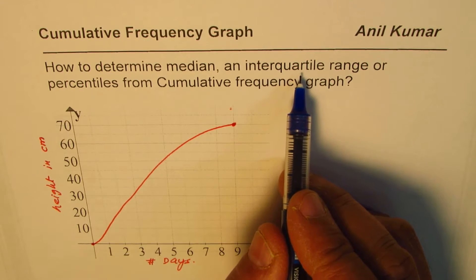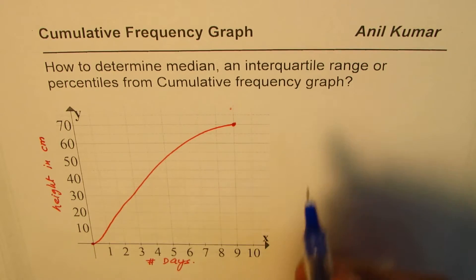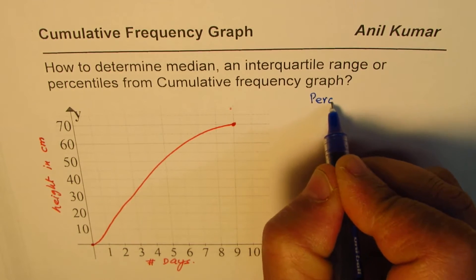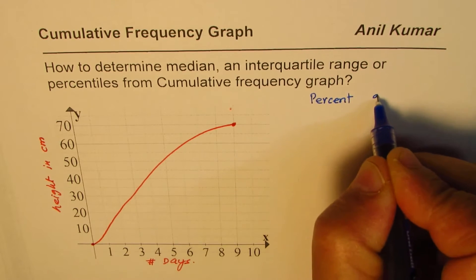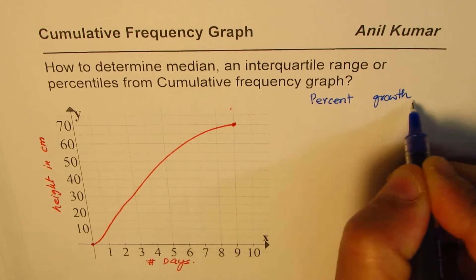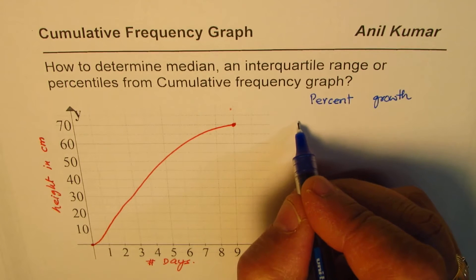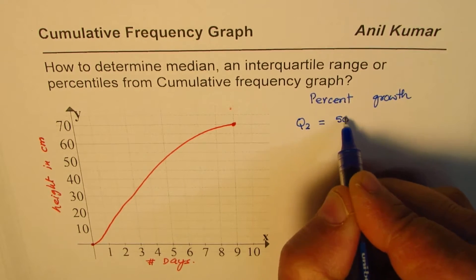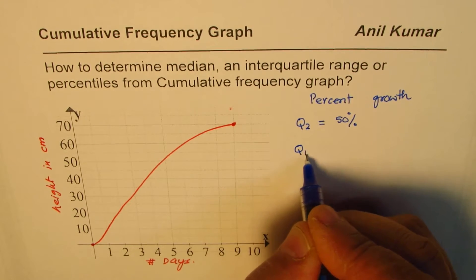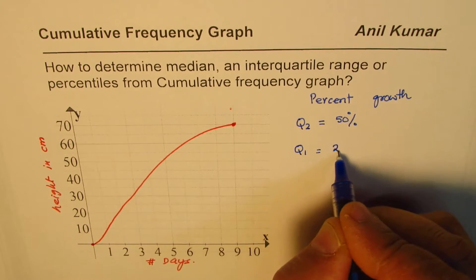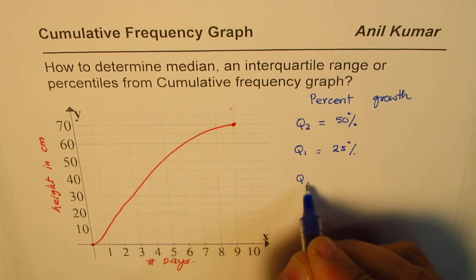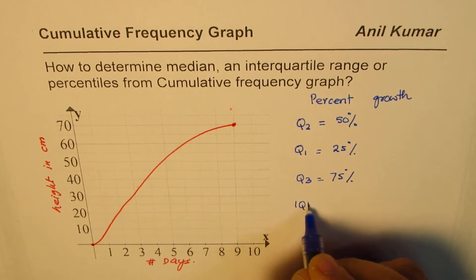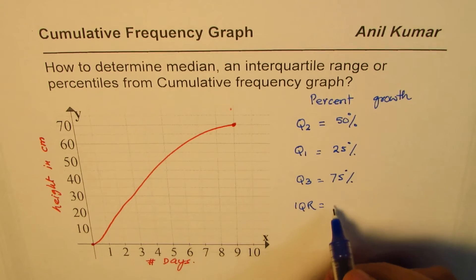So how do we find those? Well the answer to this is we can write this growth as percent growth. Now if I write this growth as percent growth, in that case we know median Q2 will be 50%, Q1 the first quartile will be 25%, Q3 will be 75%, interquartile range will be difference between Q3 and Q1.